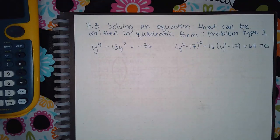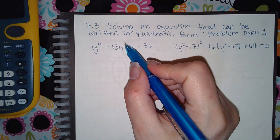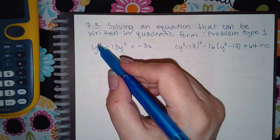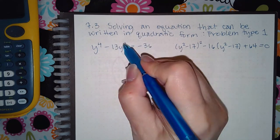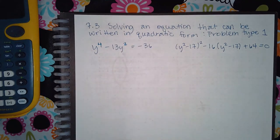Here we have solving an equation that can be written in quadratic form, problem type 1. So essentially what you're looking for is the power on this expression doubled in the first expression. So here my power is 2, and if I double that, I get 4. So this is the quadratic type.